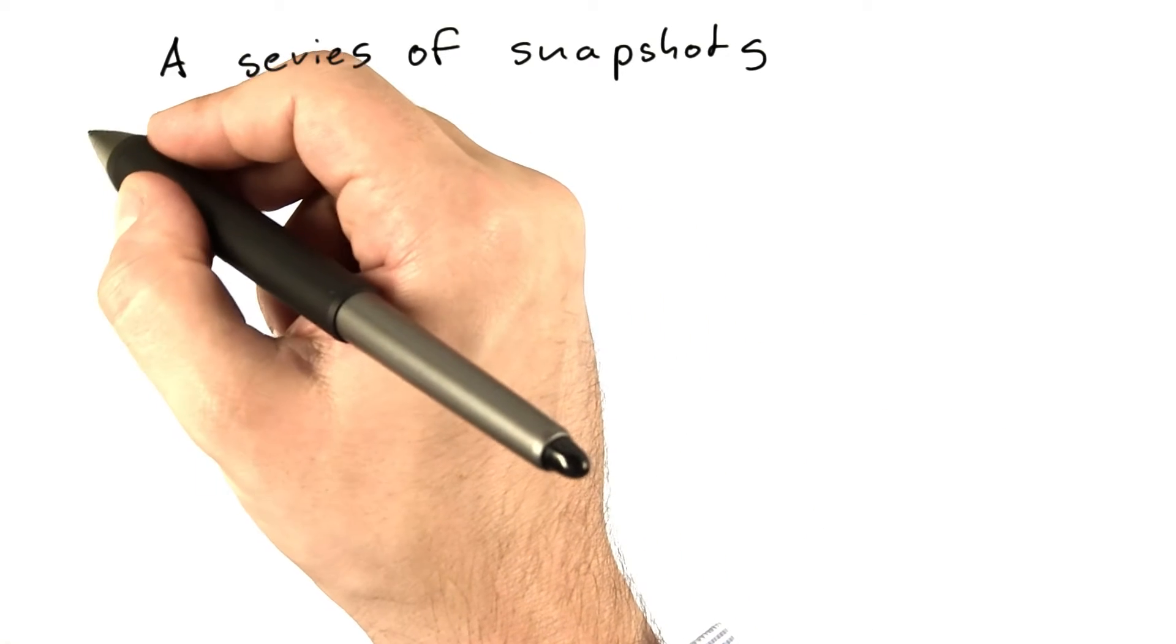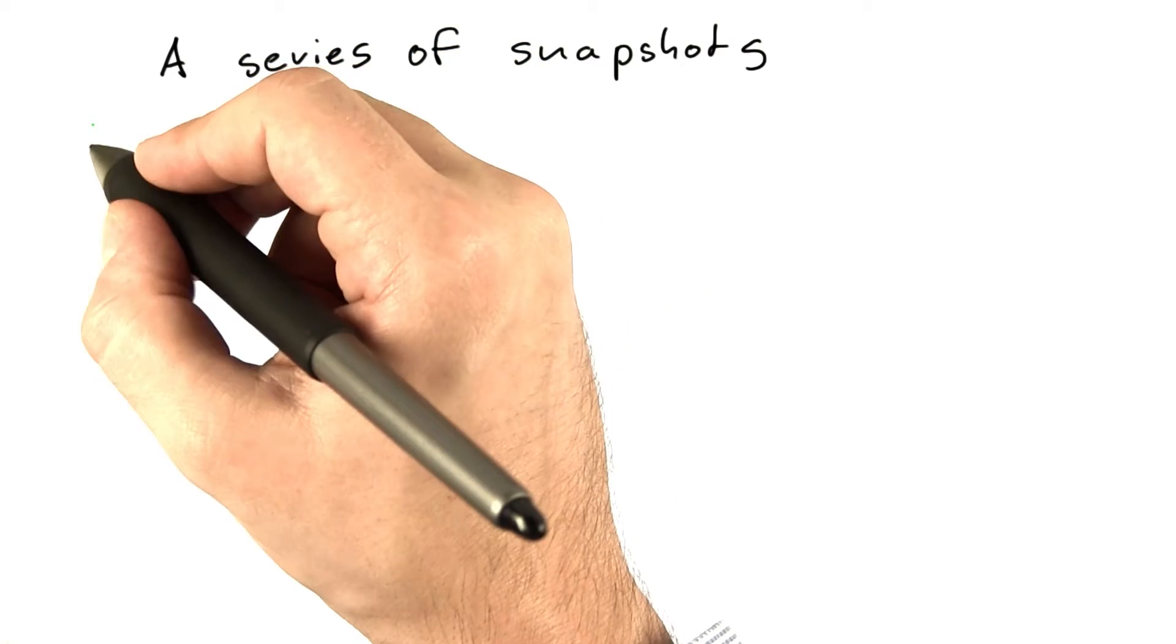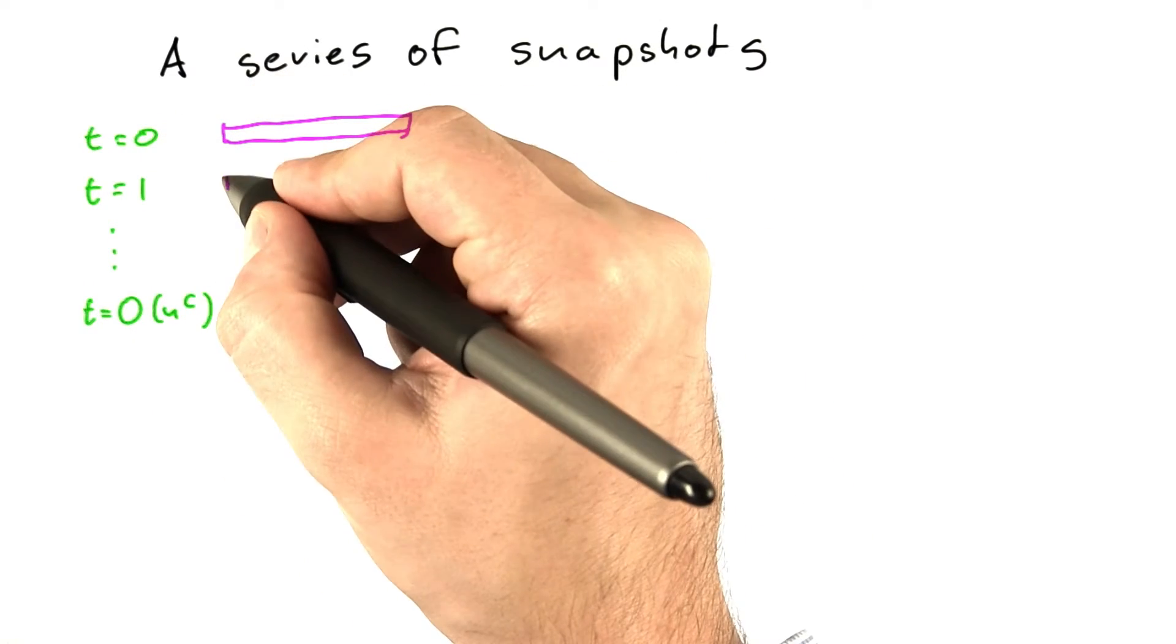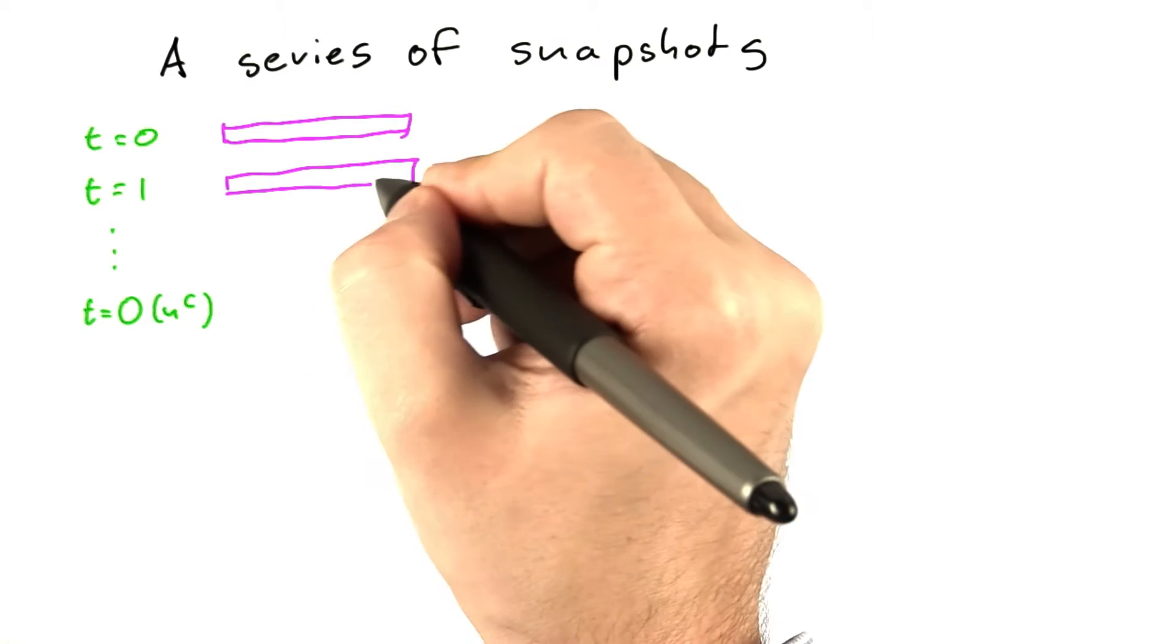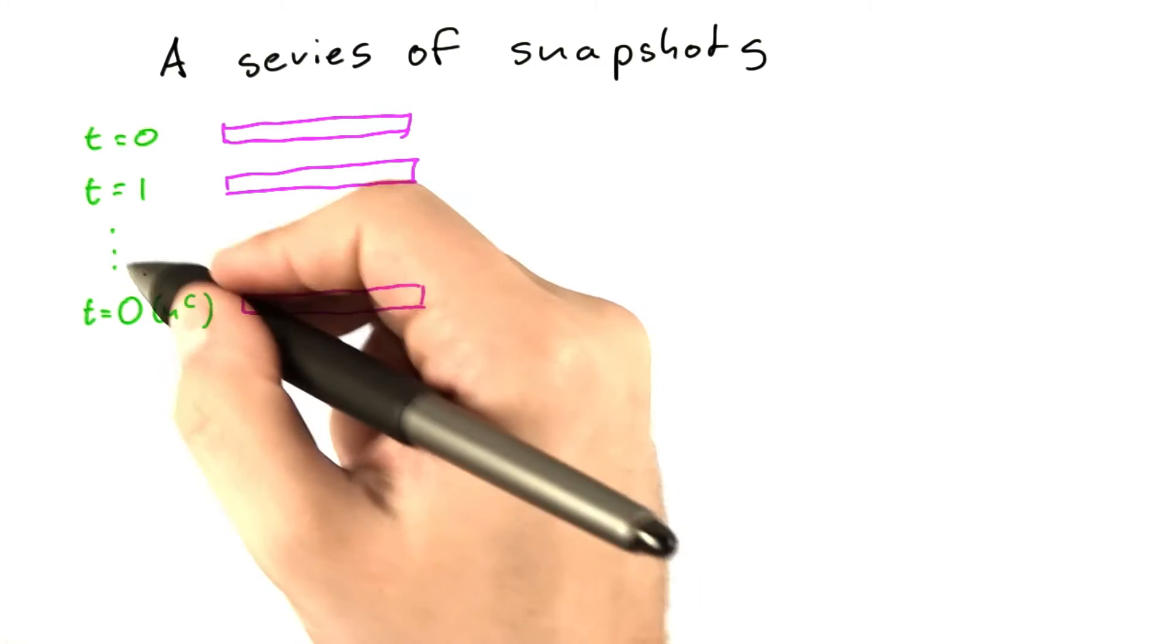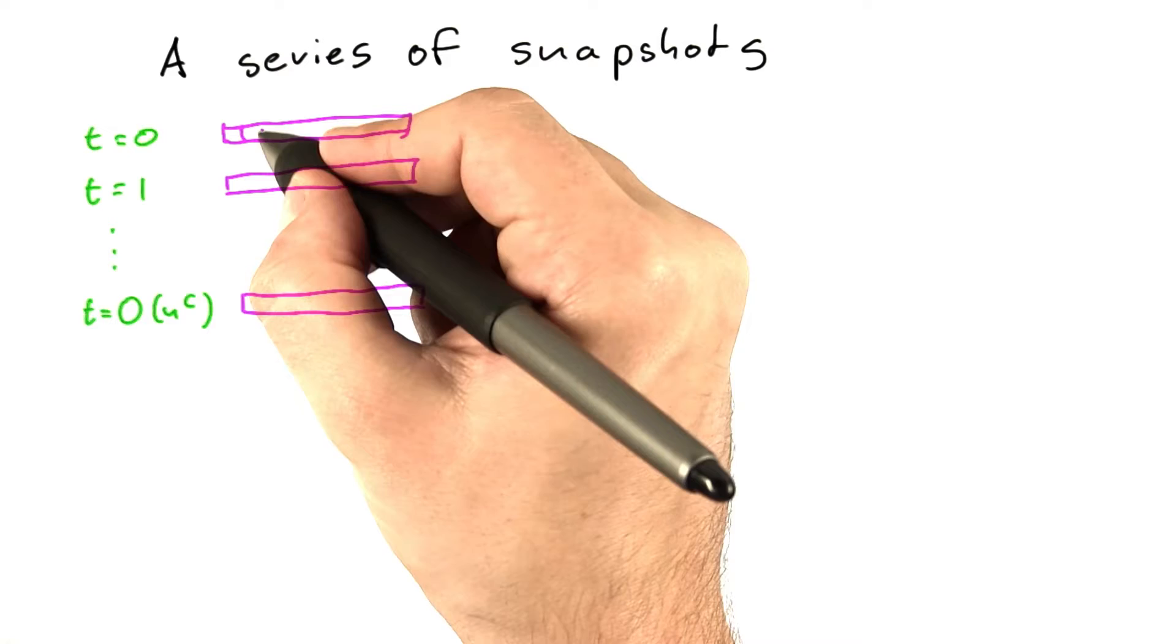Now our Boolean formula that we're building as an input to SAT is going to become even larger. As you have seen before, the calculation that a non-deterministic RAM makes for a given input can be represented as a polynomial number of snapshots.